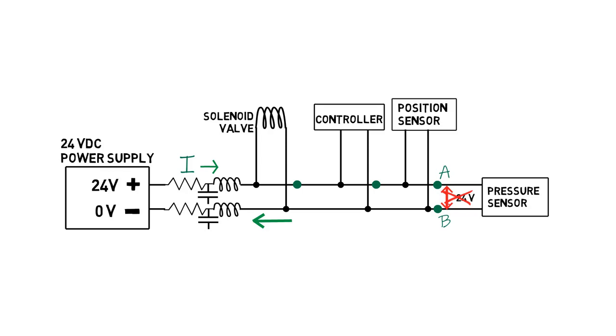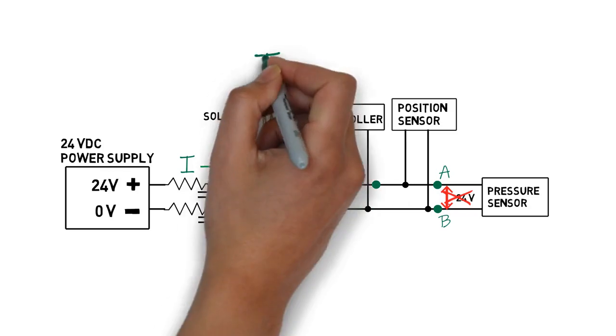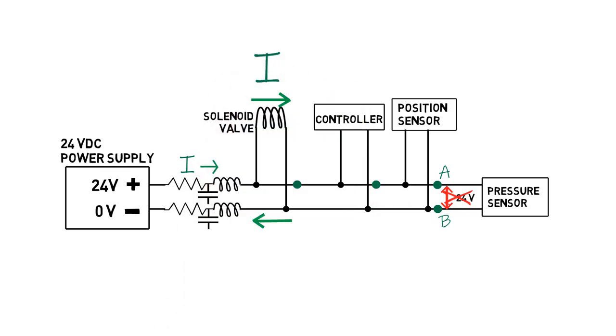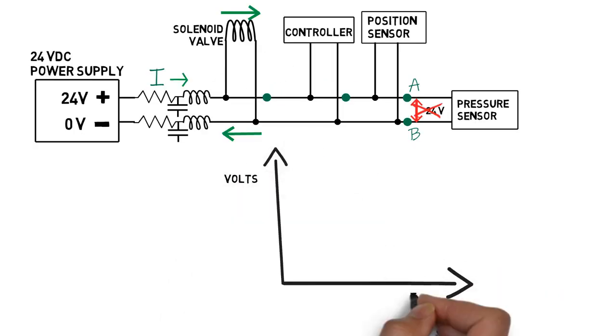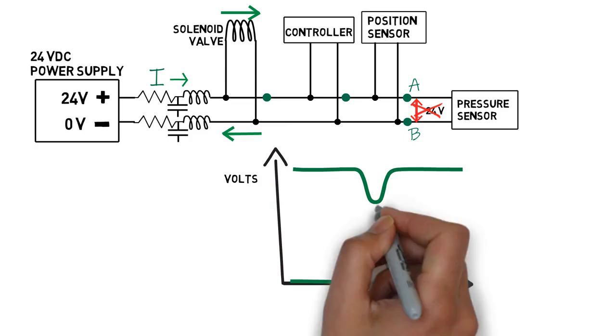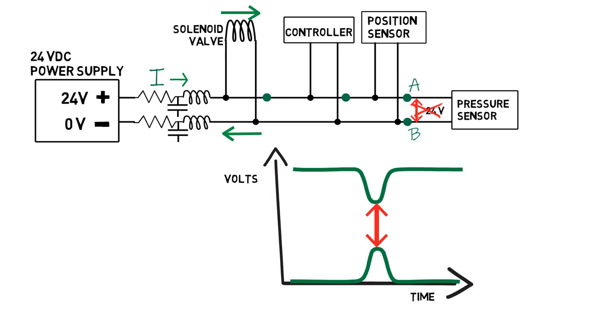This is especially pronounced when the valve fires, since solenoid valves typically draw a lot of current quickly. With a large sudden current, the plus wire voltage will dip down, and the return wire voltage will bounce up. If the resulting voltage difference is less than the required voltage of the other devices on the circuit, they may momentarily lose power.